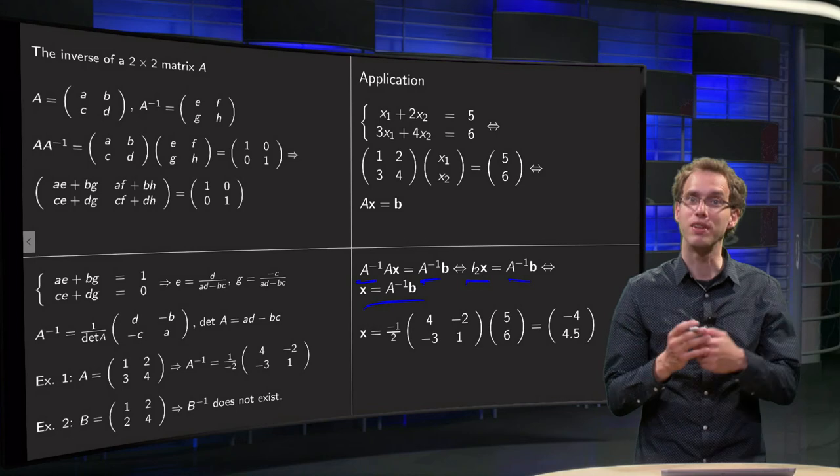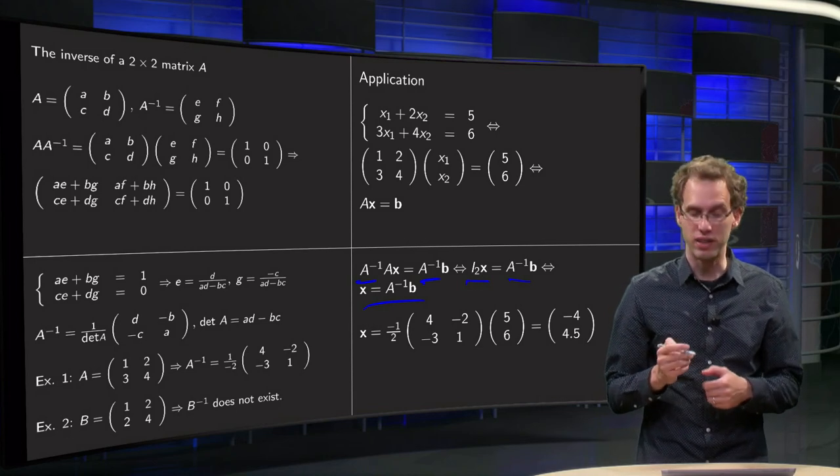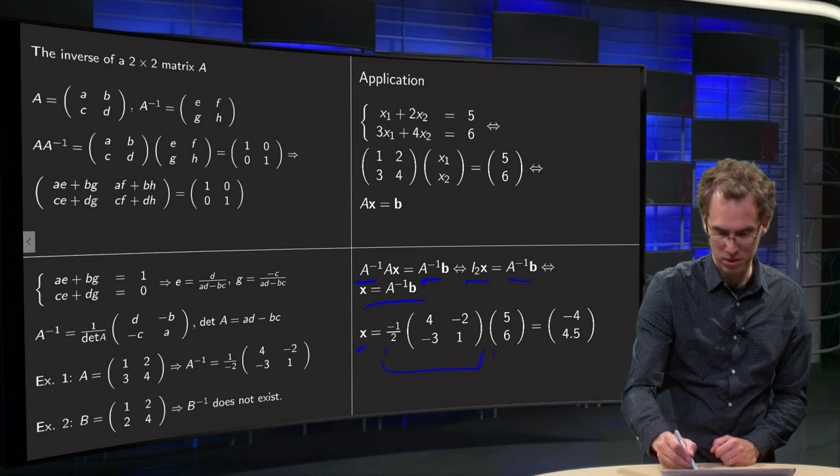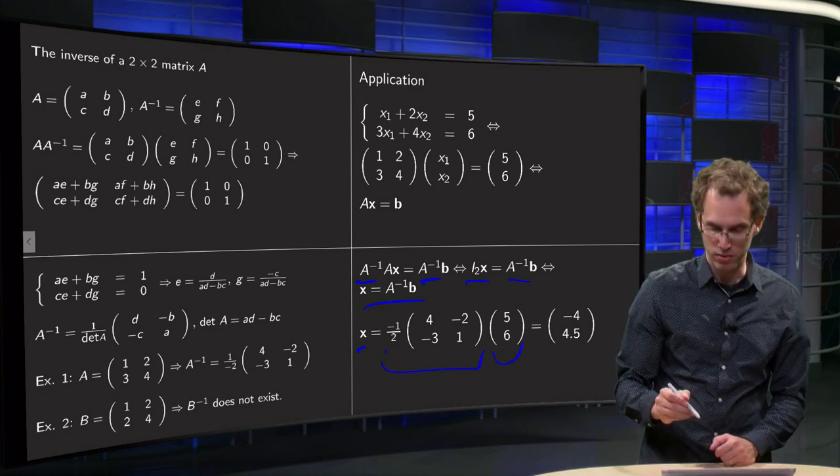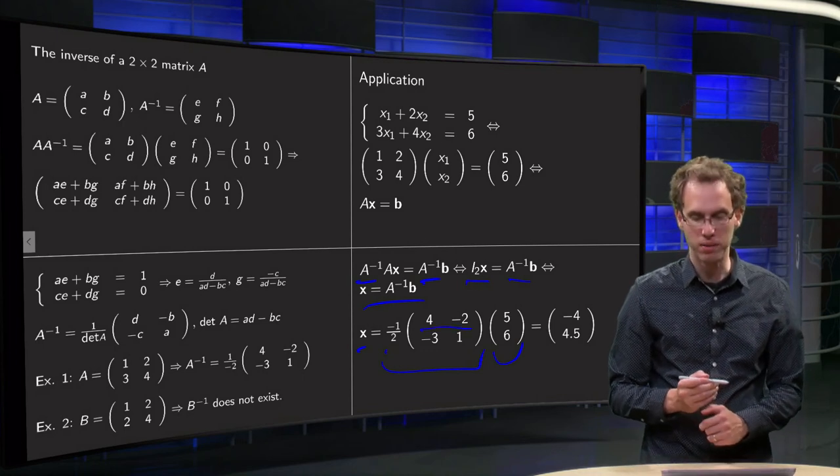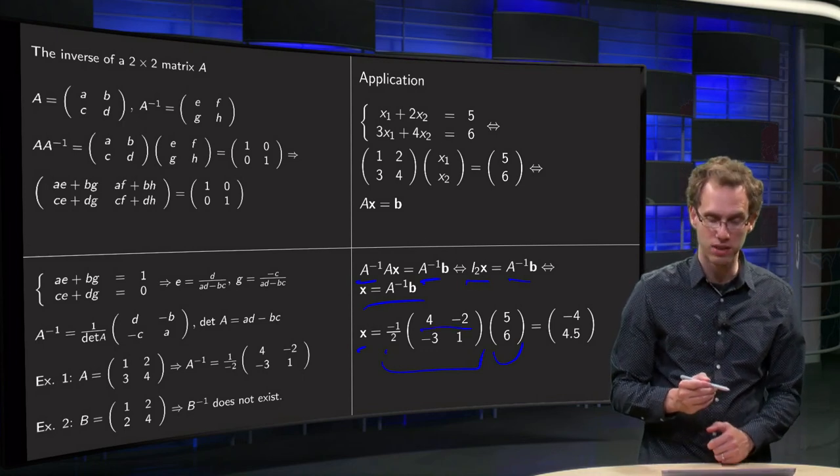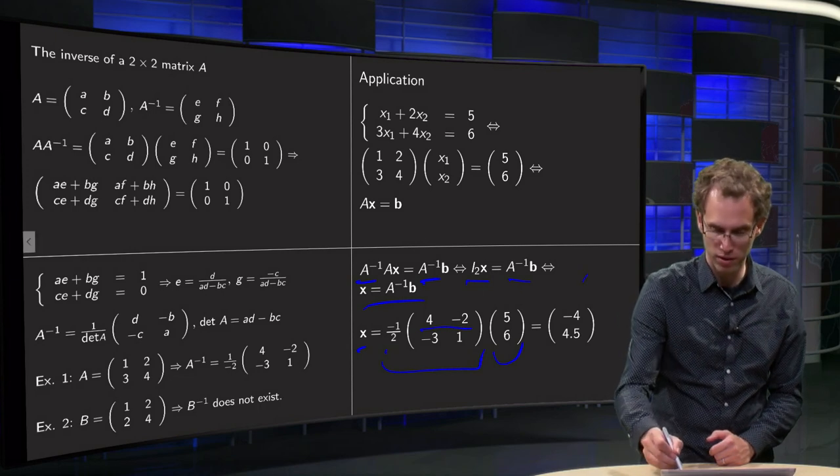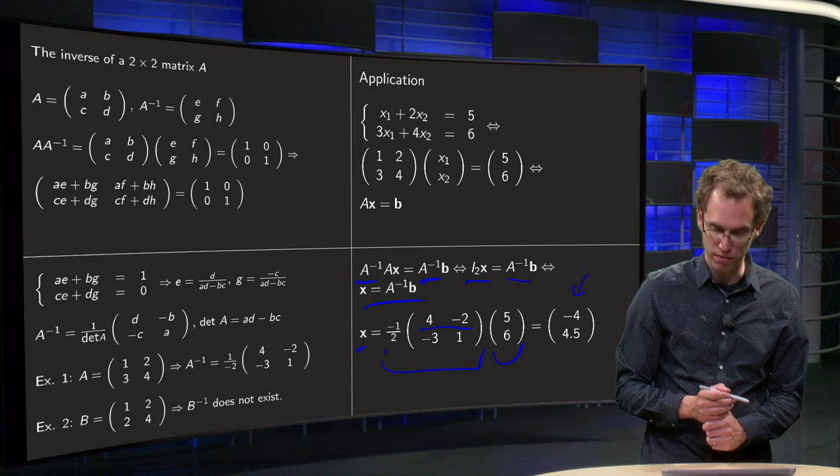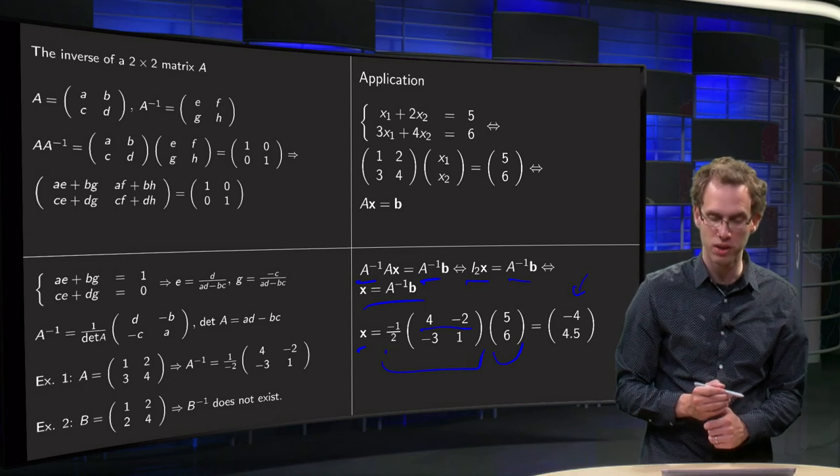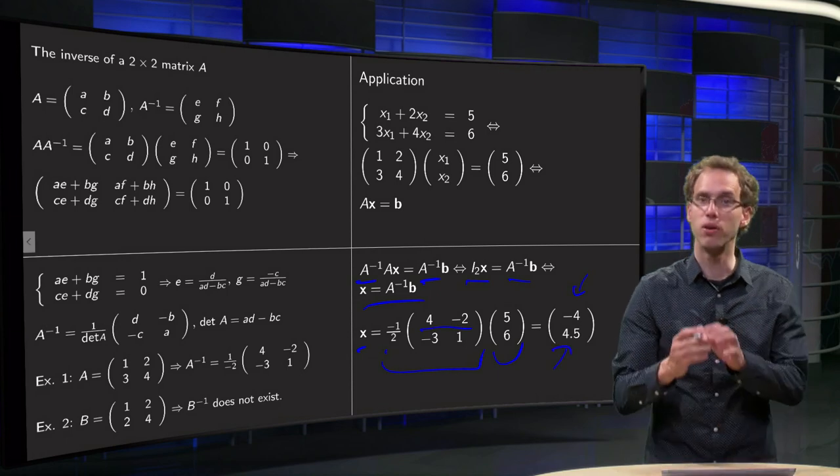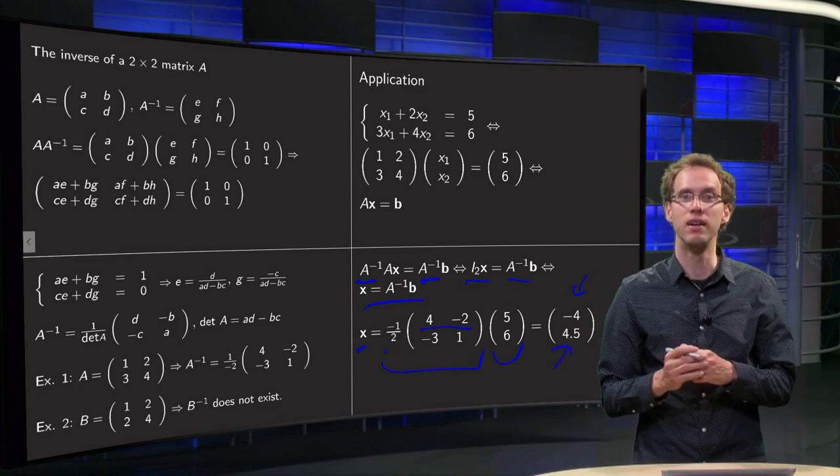So with this trick, we can immediately find our x. x equals the A inverse times b, equals minus 1 half times [[4, -2], [-3, 1]] times [[5], [6]] equals [[20 - 12], [-15 + 6]] equals [[8], [-9]] times minus 1 half equals [[-4], [4.5]]. So there you have immediately your x.